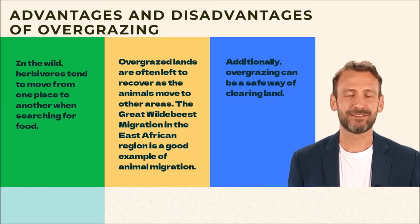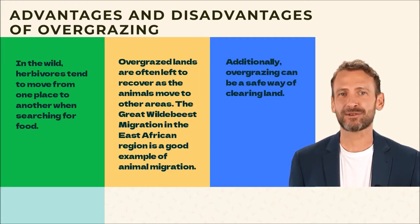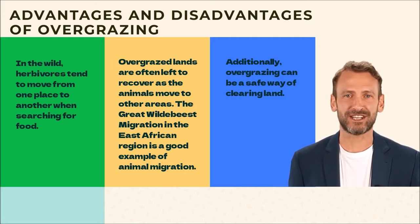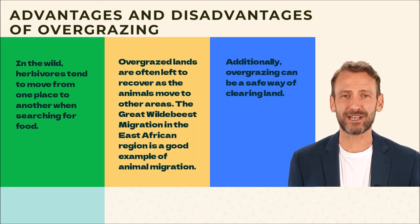The great wildebeest migration in the East African region is a good example of animal migration. Additionally, overgrazing can be a safe way of clearing land.